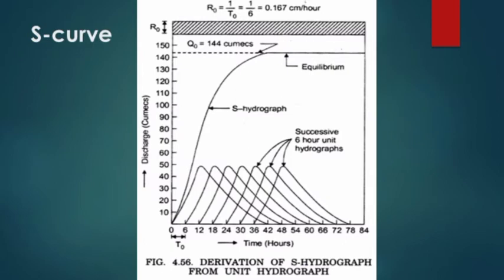This diagram represents the derivation of the S hydrograph from the unit hydrograph using a six-hour unit hydrograph. Successive six-hour unit hydrographs are added together over an infinite time period. The result is the S hydrograph, which reaches the equilibrium value Q0. The S curve can be generated from a unit hydrograph, and this is the theoretical basis for numerical problems.